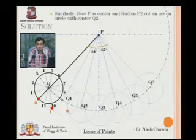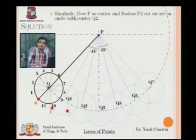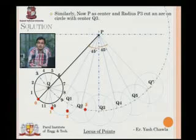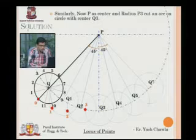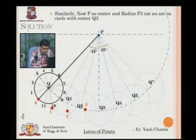the circle that is being made from Q2. Again for Q3, same distance P2—P3 is the distance. Mark an arc on the circle that is Q3.